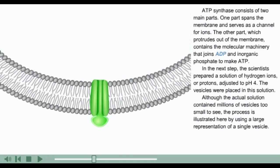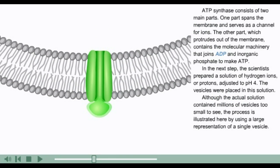ATP synthase consists of two main parts. One part spans the membrane and serves as a channel for ions. The other part, which protrudes out of the membrane, contains the molecular machinery that joins ADP and inorganic phosphate to make ATP.